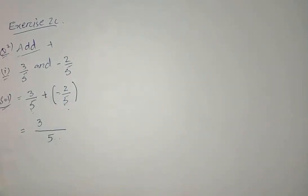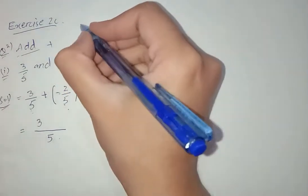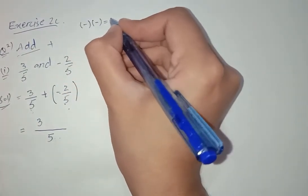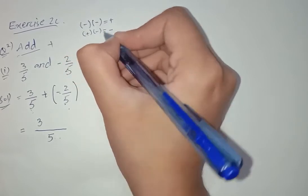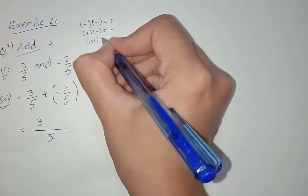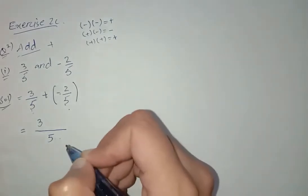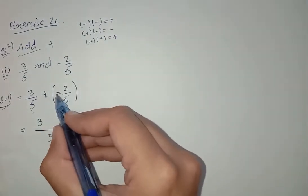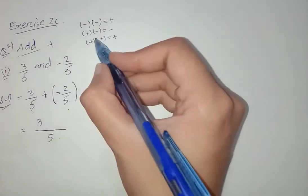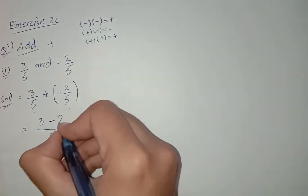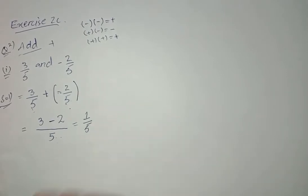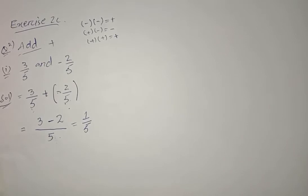I can tell you about the signs: plus minus is minus, plus plus is plus, and minus minus is plus. So here we have plus minus, which is minus. We have to subtract 2 from 3, and the answer is 1 by 5. The question is completed.